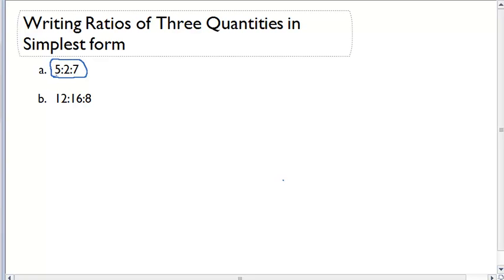the numbers in this ratio, are all of the numbers divisible by the same common factor? If I think about 5, 2, and 7, I would say there are no common factors. Because of that, this ratio is in simplest form.